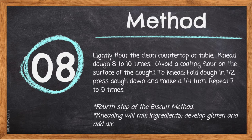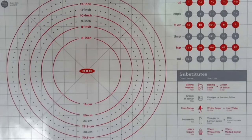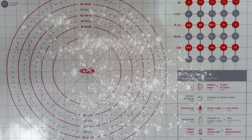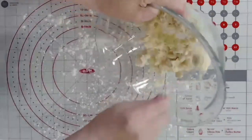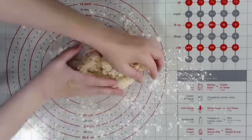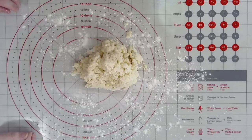Step 8: Lightly flour the clean countertop or pastry mat. Knead dough 8 to 10 times — fold dough in half, press down, and make a quarter turn, repeating 7 to 9 times. Kneading will mix the ingredients, develop gluten, and add air. Make sure you have a light coating of flour so the dough doesn't stick. Turn out your dough — it might be crumbly at first but it will come together once you start kneading.